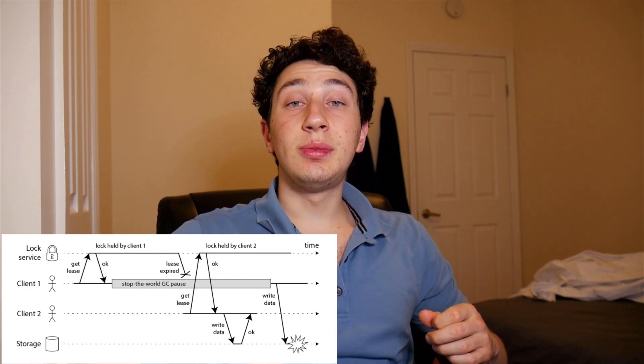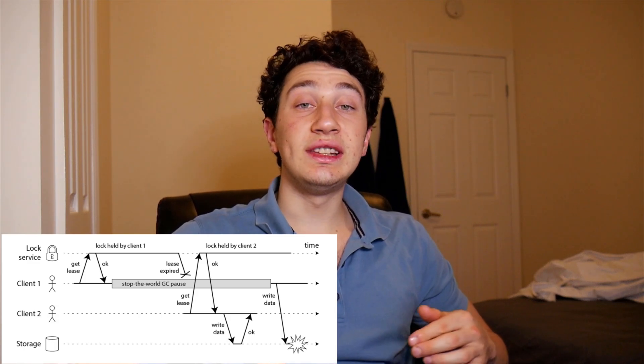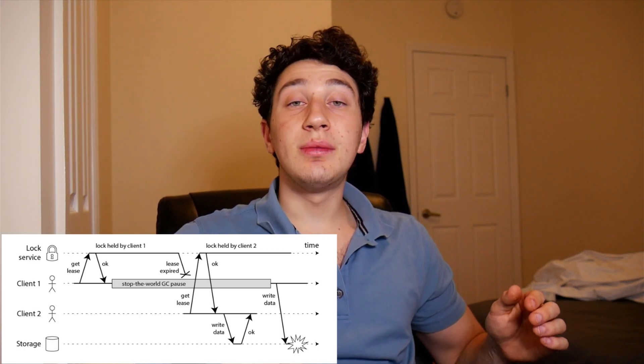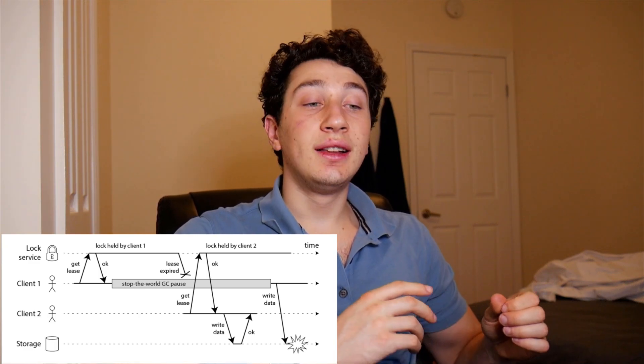Now, this should be ringing alarm bells, because you can't know for certain that the machine currently holding the lock is actually done with it — it may still be doing work. It may be having something like a process pause from garbage collection, taking longer than normal, or maybe there's a network delay. The point is, this machine might still think it's holding the lock because it never actually called release on its own. So it might go right over to S3, try and edit a file, and cause corruption because someone else has already grabbed the lock.